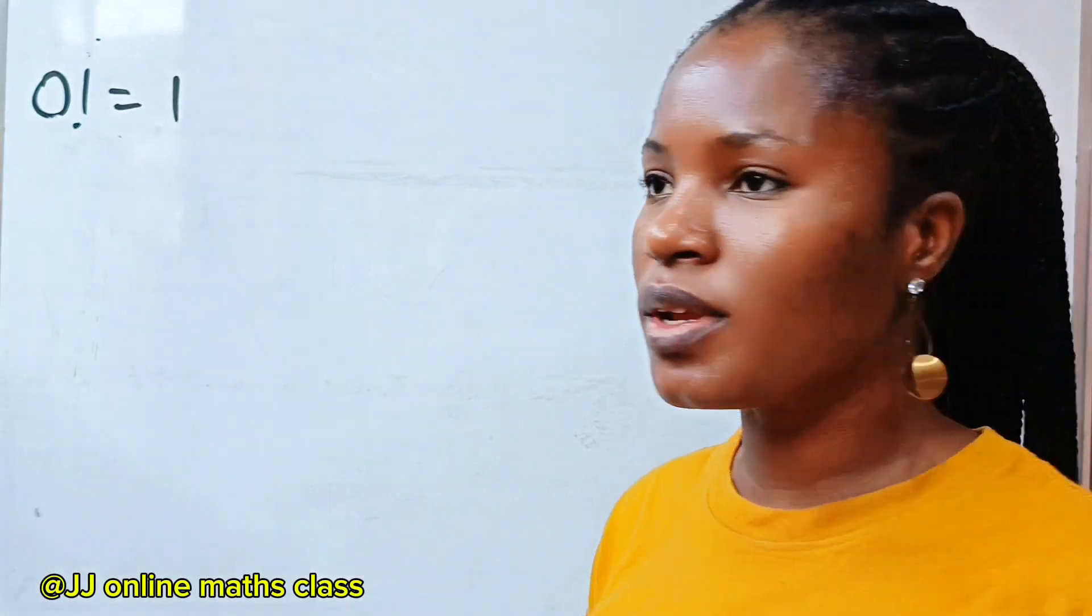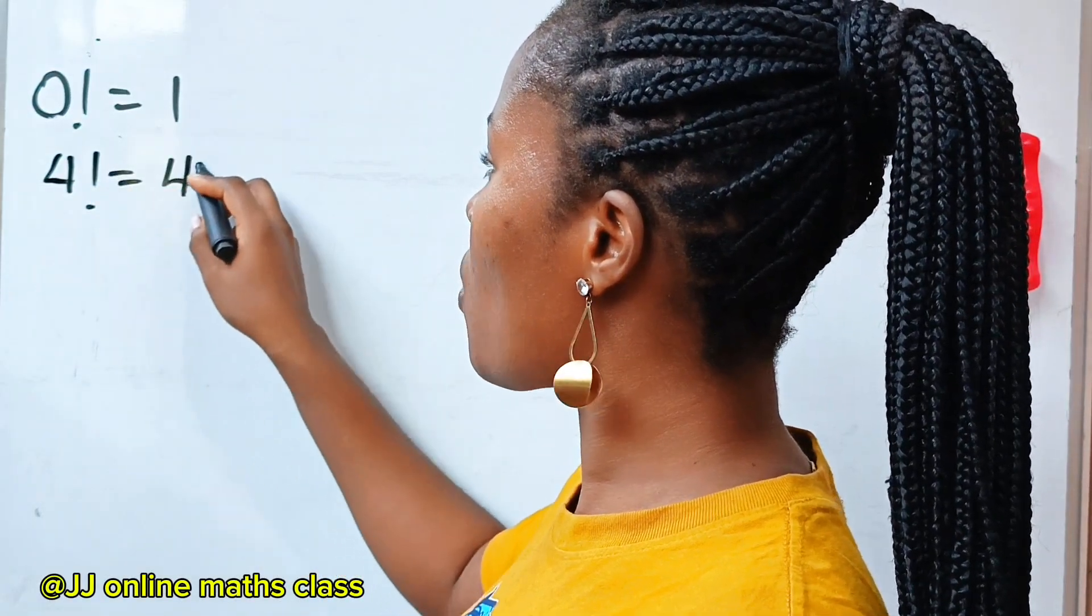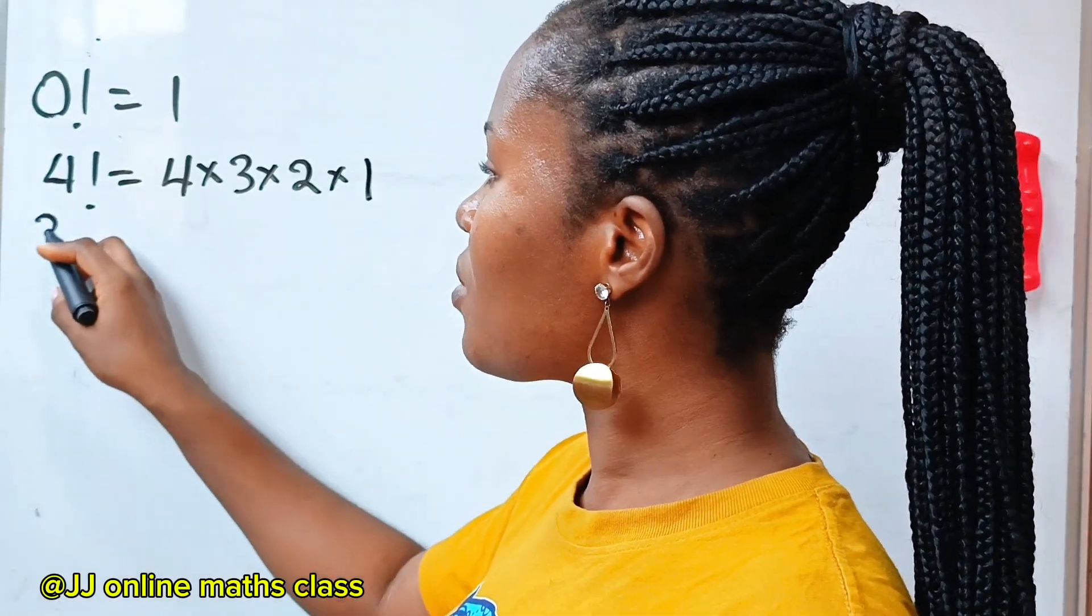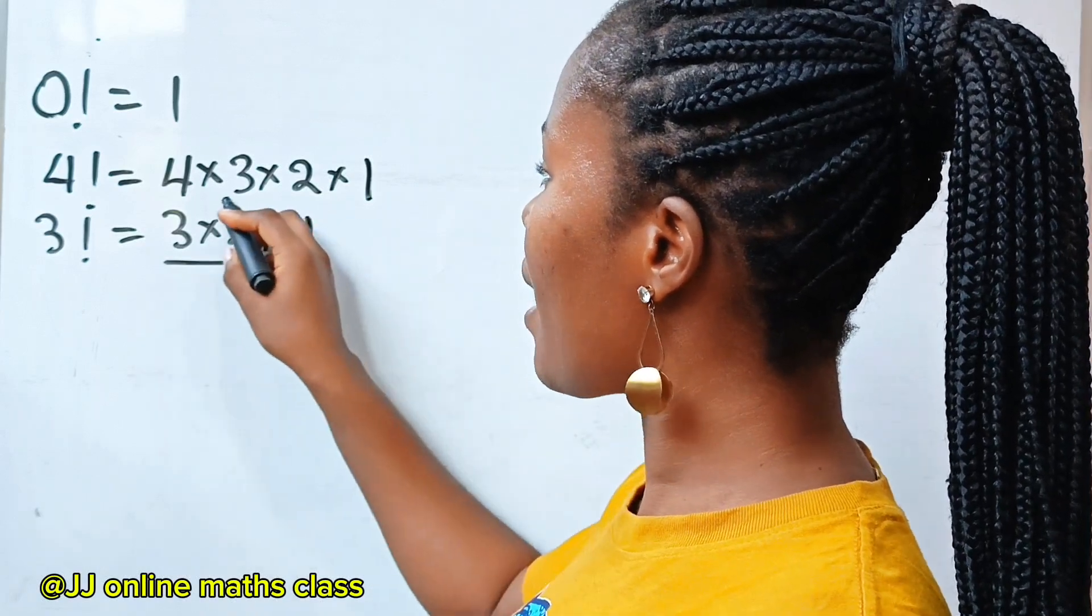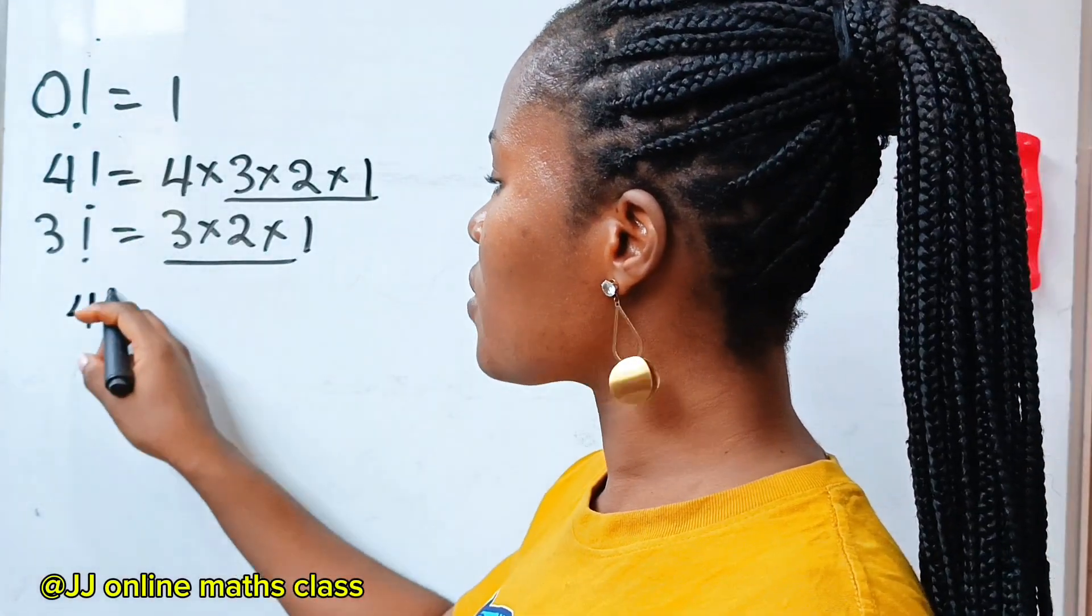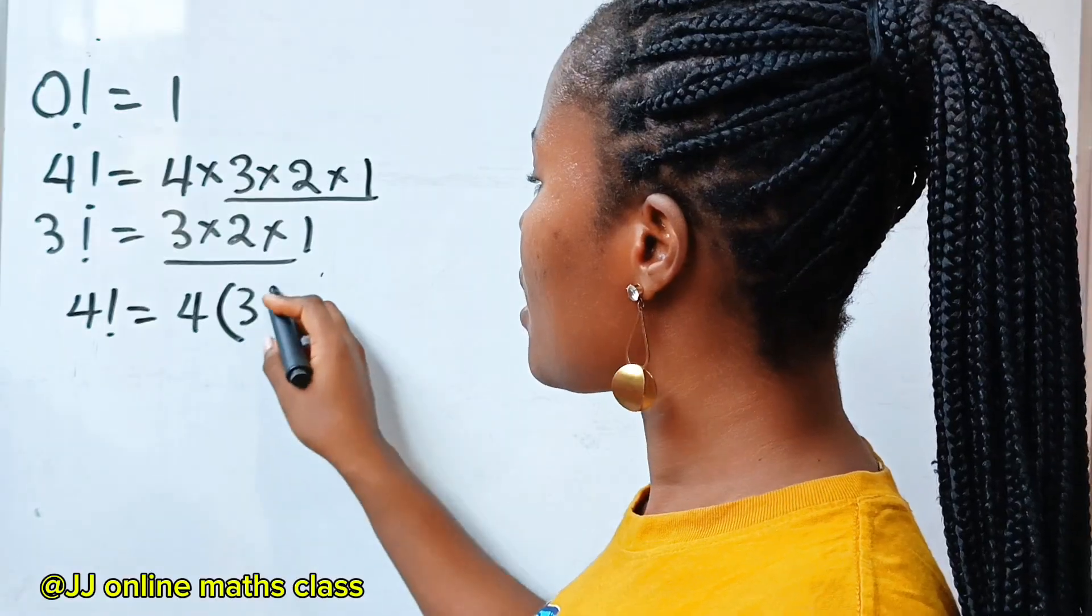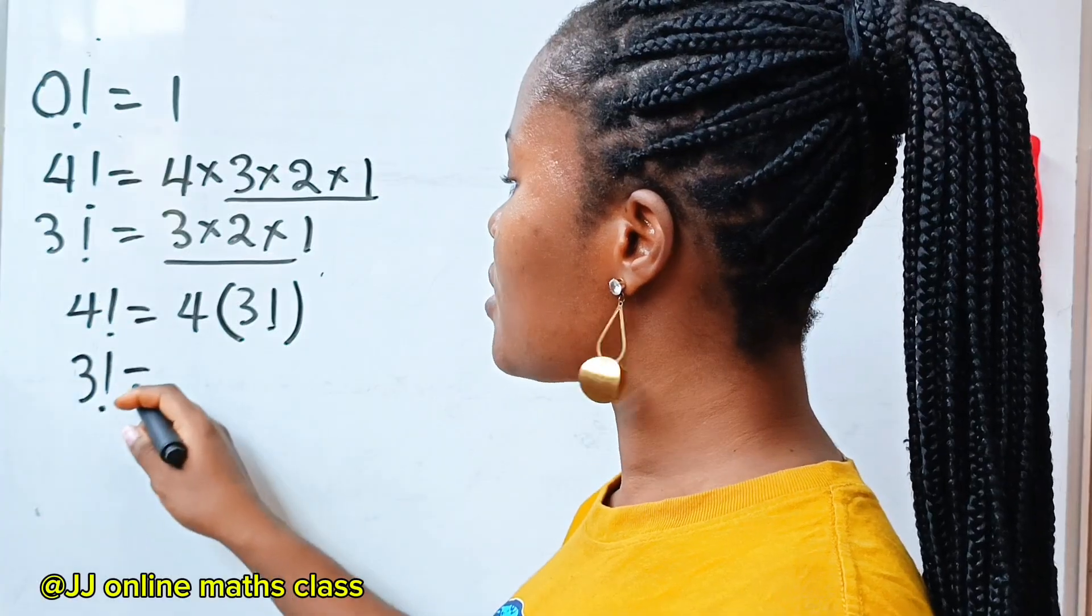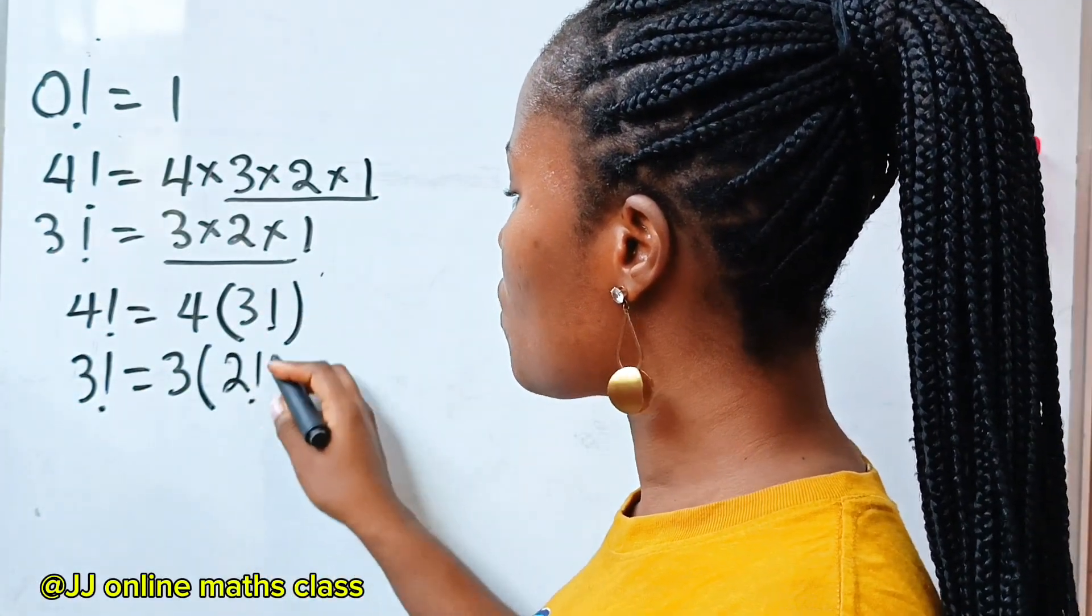Thank you very much. So the second one is, if I say 4 factorial, 4 factorial is the same thing as 4 times 3 times 2 times 1. Now, 3 factorial is 3 times 2 times 1. So you can see that we have 3 factorial in 4 factorial. That means if I want to write 4 factorial, I can write it as 4 multiplied by 3 factorial. Can you see that similarly, this 3 factorial is equal to 3 multiplied by 2 factorial.